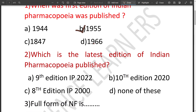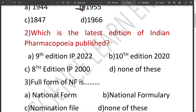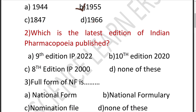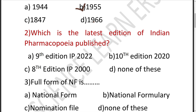The second question is: Which is the latest edition of the Indian Pharmacopoeia published? This is not in the book but it is in the current affairs — you should know when it came. The answer is 2022. It is the 9th edition, IP 2022. The correct answer is the 9th edition IP 2022 — this is the latest edition, introduced in the same year 2022.